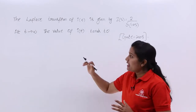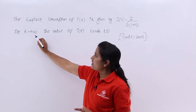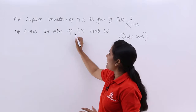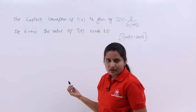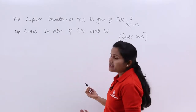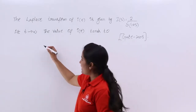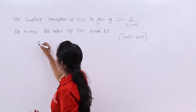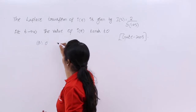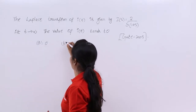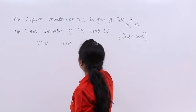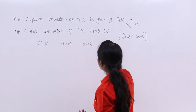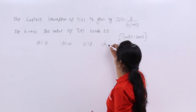They are asking: at t tending to infinity, the value of I(t) tends to? The given options are: option A — 0, option B — infinity, option C — 2, option D — none.